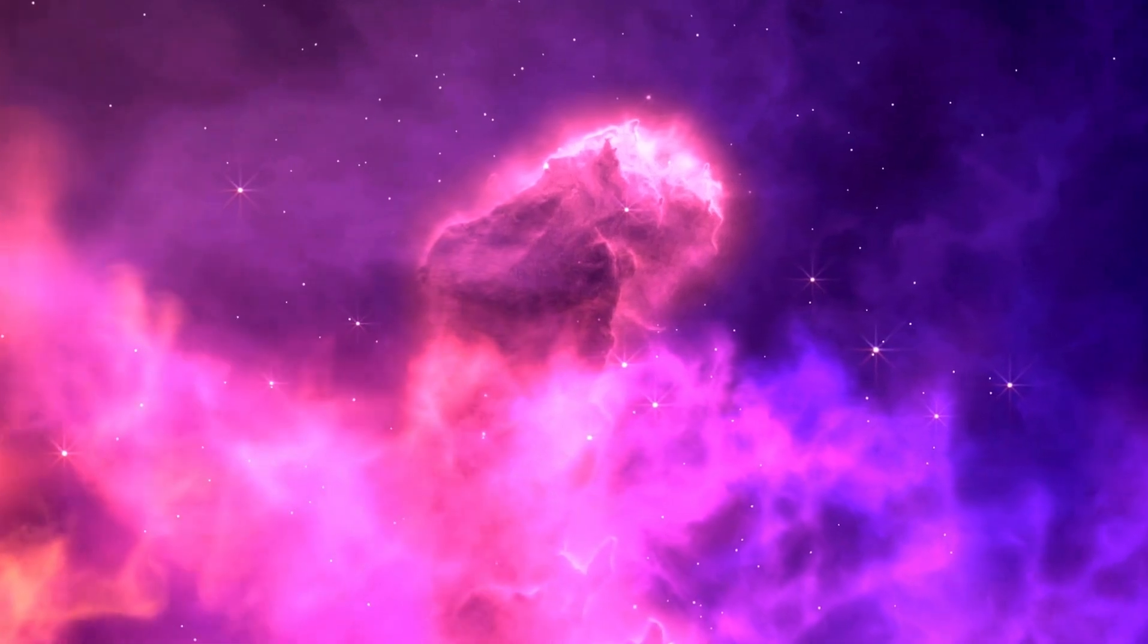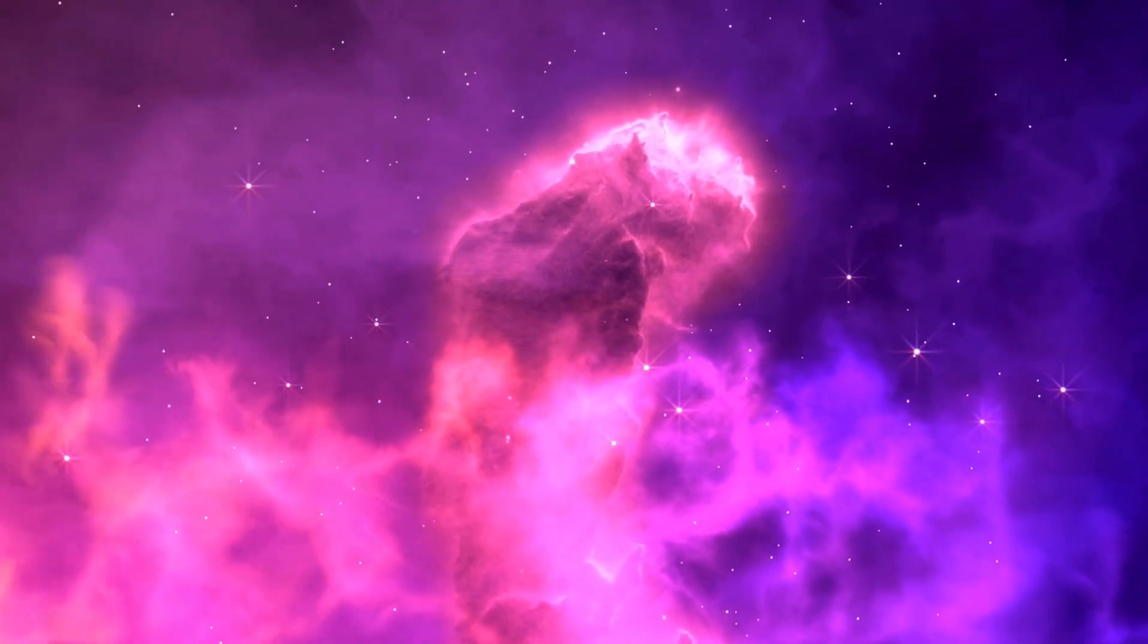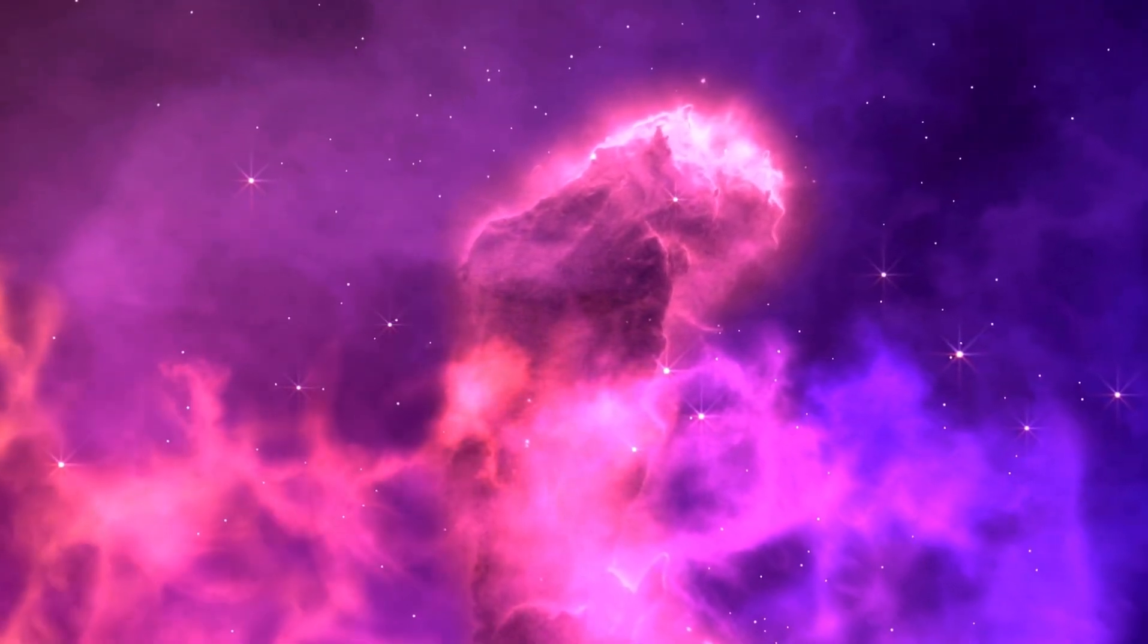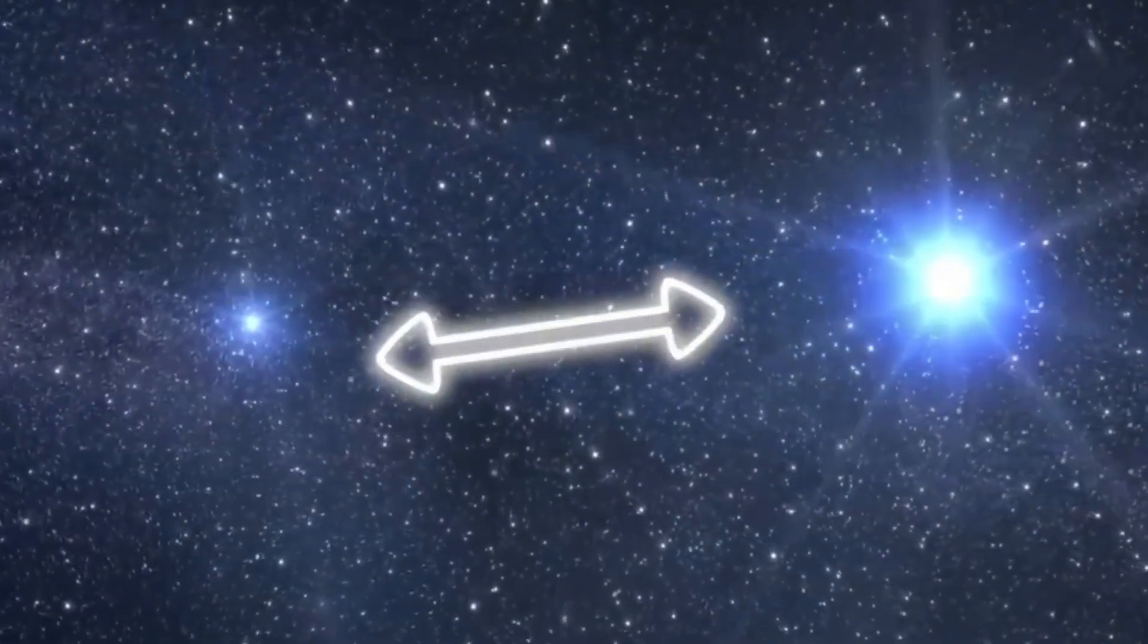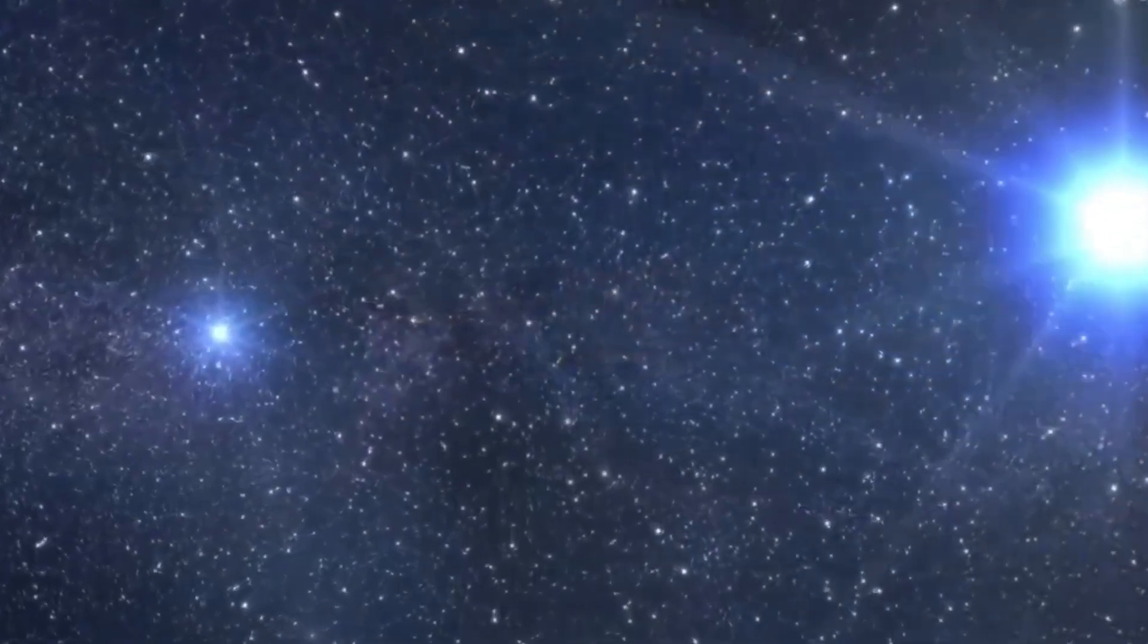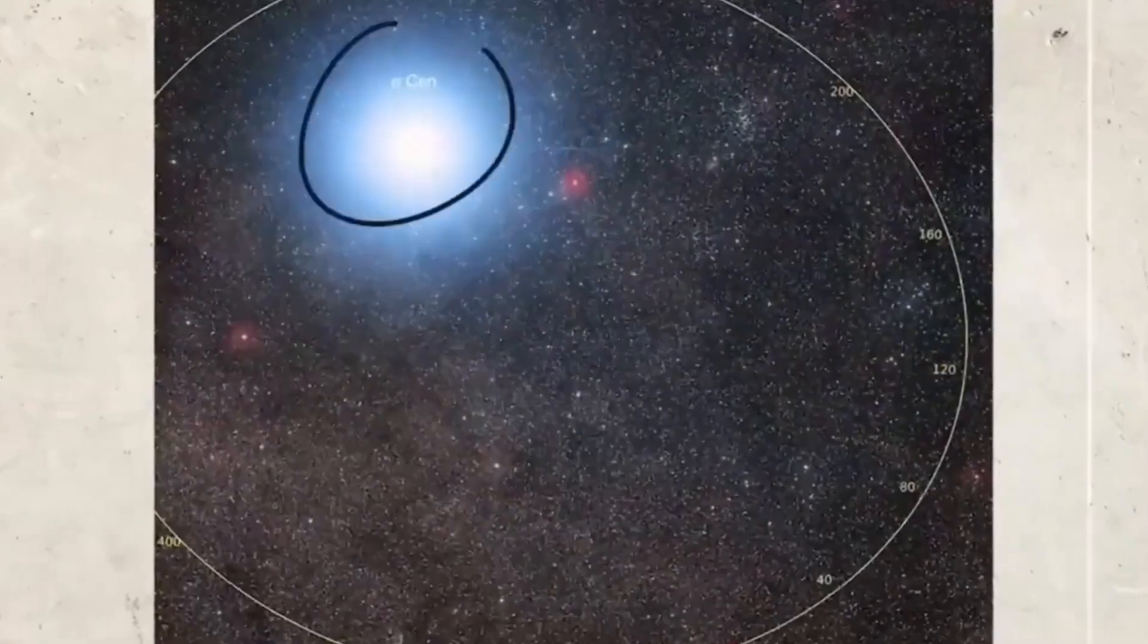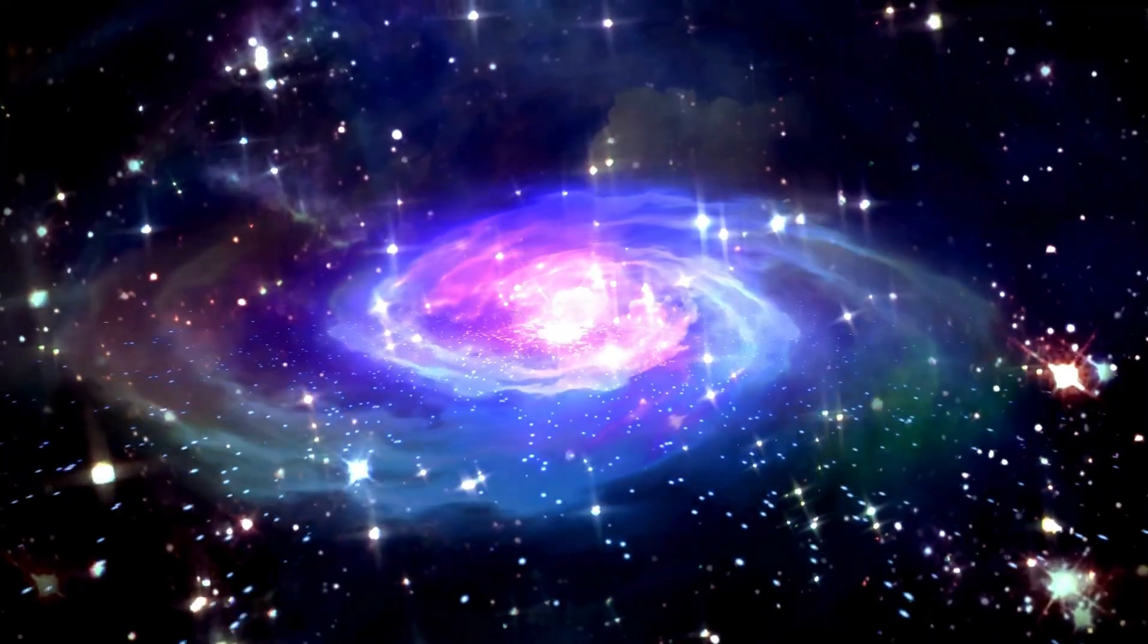This small, rocky world, located just 4.24 light years away, has long been considered one of the best candidates for habitability. But what the James Webb Telescope has just detected might be the most astonishing revelation yet: evidence of an advanced civilization on Proxima b.